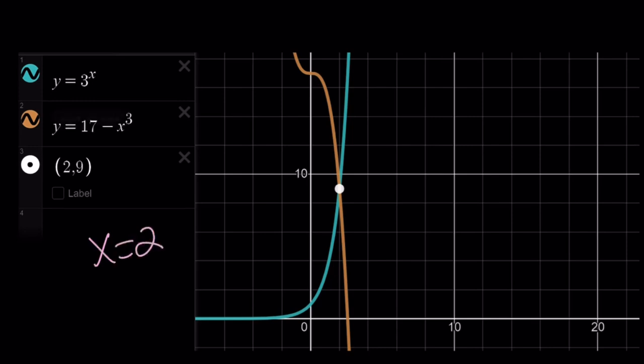So 17 minus x cubed is basically, remember the cubic function? It is always decreasing because it's negative, and 17 just brings it up 17 units. And 3 to the power of x is always increasing, it's exponential, and they intersect.